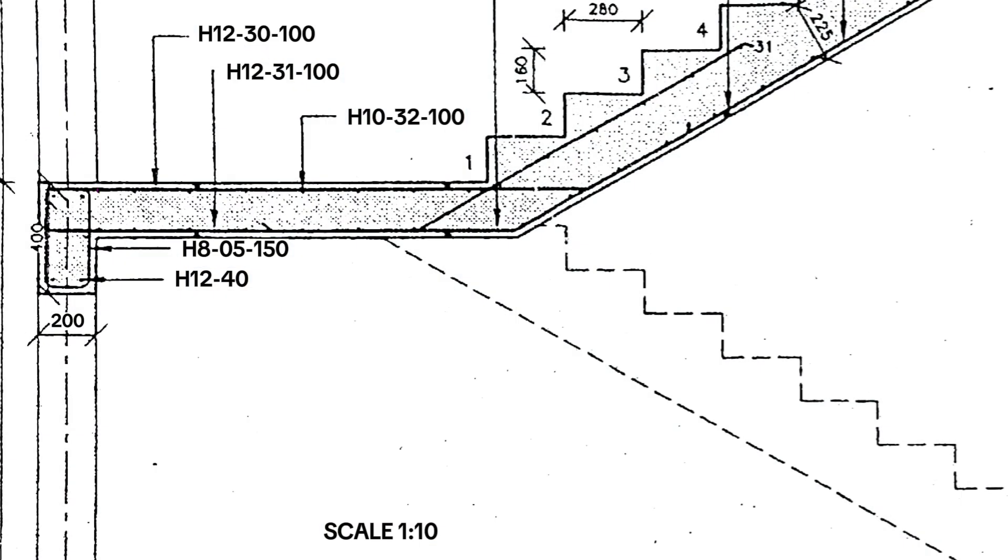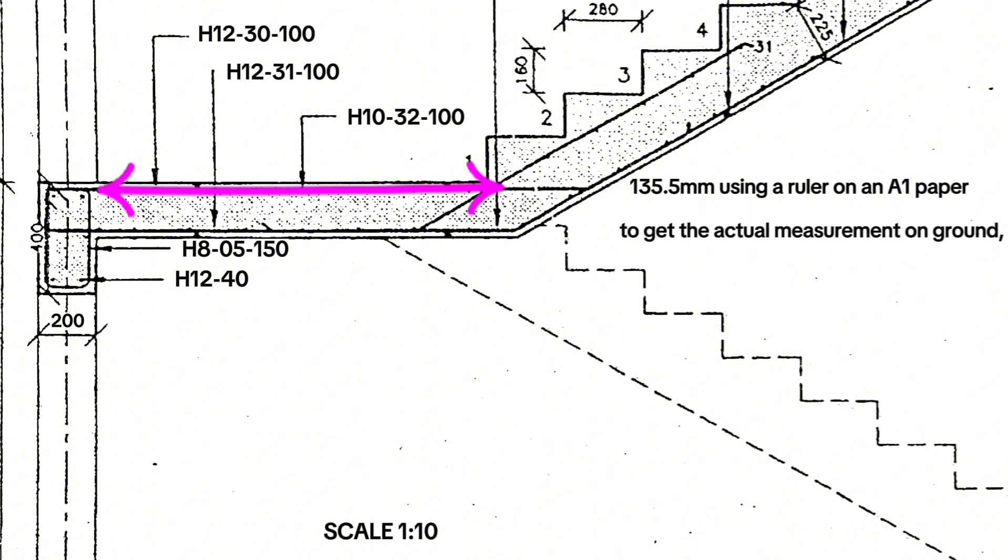For example, if you measure along this landing as 135.5 millimeters on an A1 paper and the scale is 1 in 10, it means that to get the actual measurement on the ground for the steel bar, I get 135.5 multiplied by 10 to get 1 meter, 355 millimeters. And that is what we put in the table here.